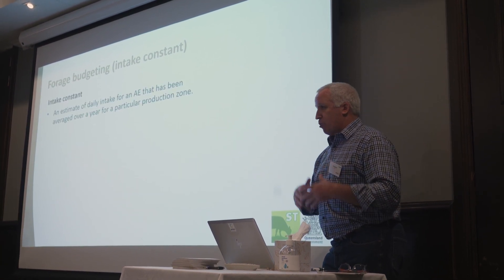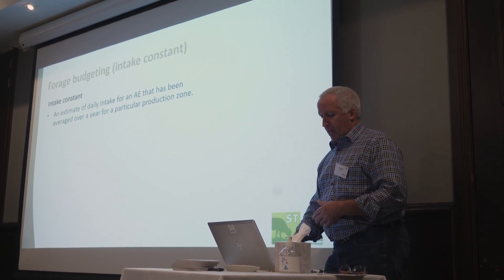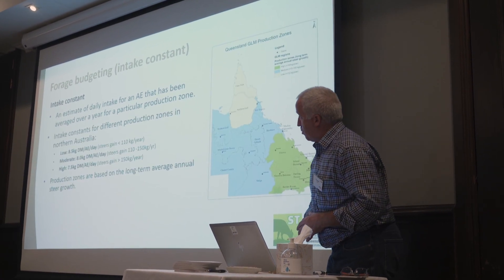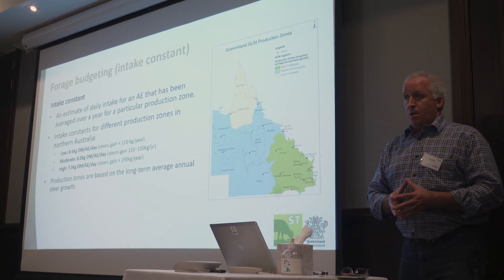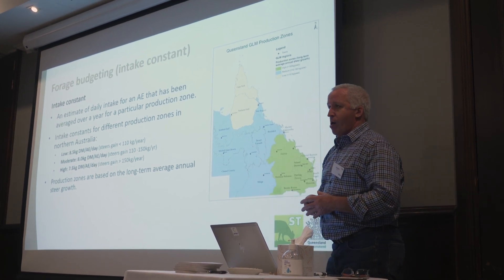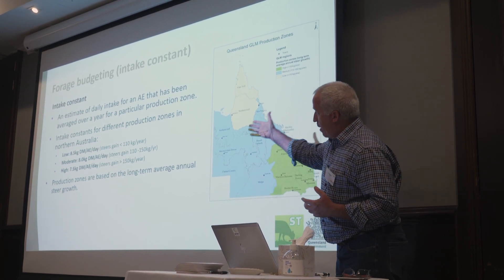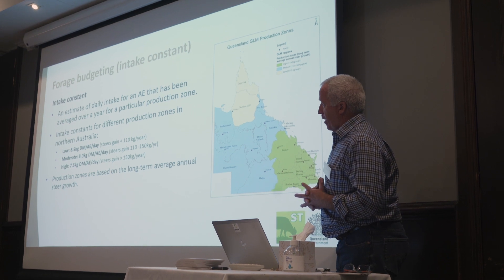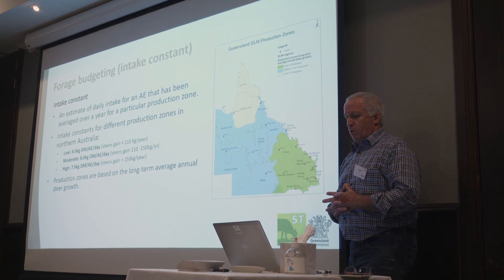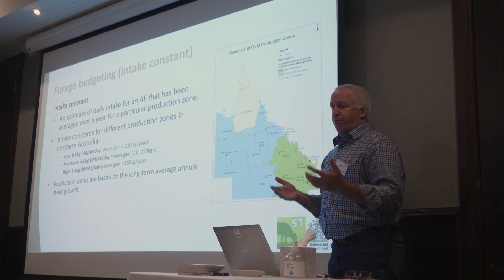We start looking at an intake constant when calculating demand — a daily intake of an AE based on a production zone. For Queensland, you can see it split into three different areas: low, medium and high. This is based on the intake of the animal for those particular regions, and the app is calculating based on your production zone for your forage budget, working on the long-term average annual steer growth.